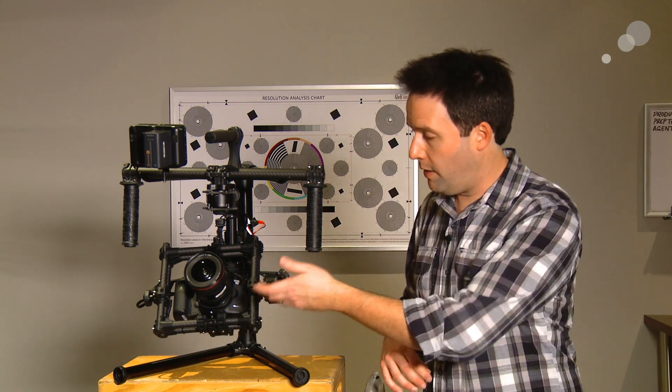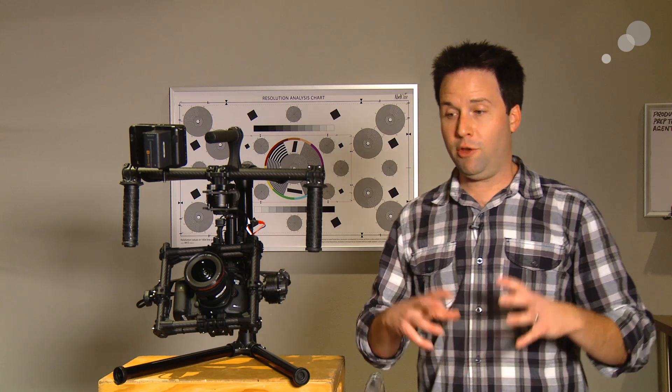Hey everyone, Andy here, and today I'm checking out the Movi M5 from FreeFly Systems. It's a three-axis gimbal stabilized system designed to work with smaller cameras like this DSLR here, the 5D Mark III, and other small rigs.